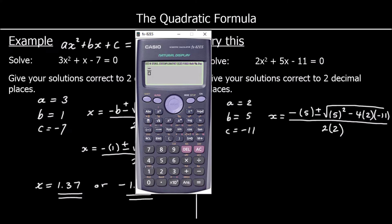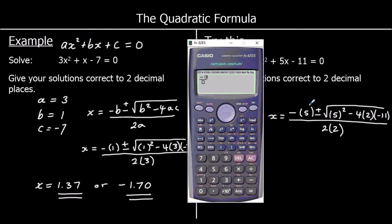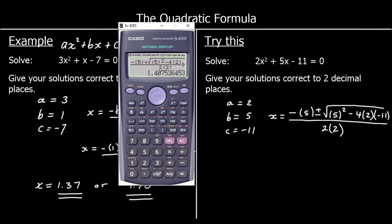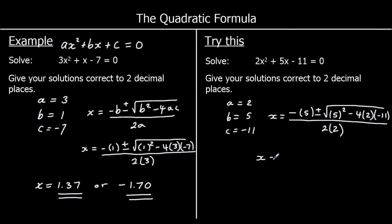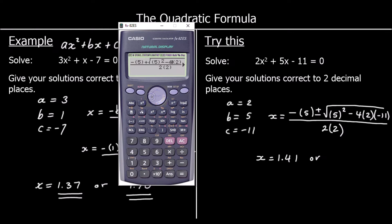Fraction button first, and then we're just replacing each of the letters in the quadratic formula with the number inside a bracket. So the square root of 5 squared minus 4 times 2 times negative 11, over 2 times 2. So we've got 1.41 to 2 decimal places. Or, if we change our plus to a minus, our second answer is negative 3.91.